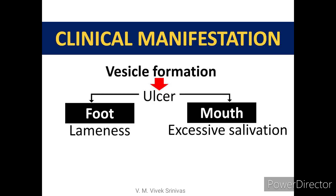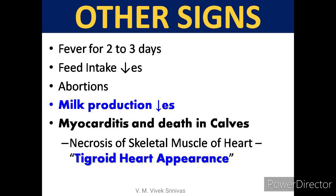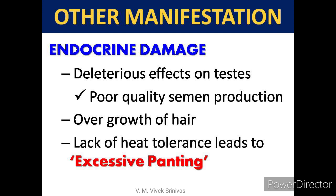Clinical manifestations: Vesicles — fluid-filled blisters — form and subsequently erode to form ulcers in the mouth and feet region, leading to excessive salivation and lameness. Other signs include fever, decreased feed intake, abortion in pregnant animals due to stress, and drop in milk production. Myocarditis and death are noticed in calves due to necrosis of the cardiac muscle, giving a tigroid heart appearance — a pathognomonic post-mortem lesion in FMD-infected calves. There may also be endocrine damage causing deleterious effects on the testes, decreased semen quality, overgrowth of hair, and lack of heat tolerance leading to excessive panting in cattle.